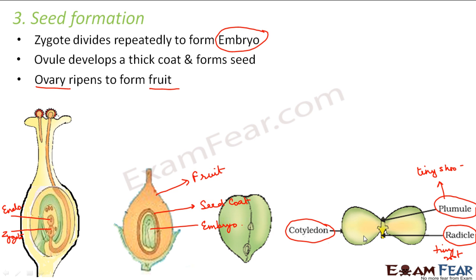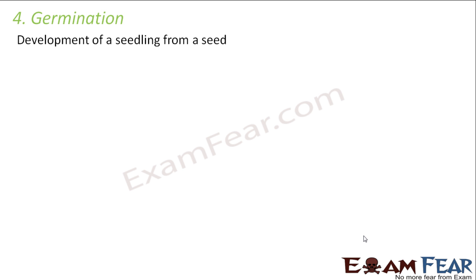The question is: when will the seed become active — that means, when will the seed give rise to a new plant? It does so under favorable conditions. Under unfavorable conditions, the seed will remain dormant — it will not be active and will not give rise to a new plant. Under favorable conditions, it will give rise to a new plant.